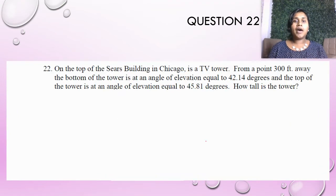Next question. On the top of Sears building in Chicago is a TV tower from 300 feet away. The bottom of the tower is at an angle of elevation equal to 42.14 degrees. And the top of the tower is at an angle of elevation equal to 45.81. How tall is the tower? Now, this was kind of a confusing statement.